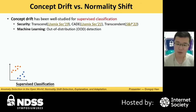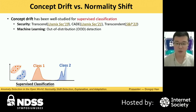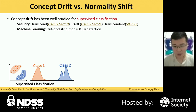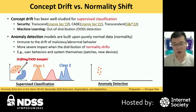Concept drift has been well studied in supervised learning. In security domains, there is excellent prior work detecting concept drift in malware classification, such as Transcend and Tesseract. In the machine learning community, there are many related works, and one remarkable direction is out-of-distribution detection. This detects drifting or out-of-distribution samples based on prior knowledge of in-distribution. However, anomaly detection models are built on only normal data, so they are immune to the drift of abnormal behaviors, but face more severe impact when the distribution of normality itself shifts.